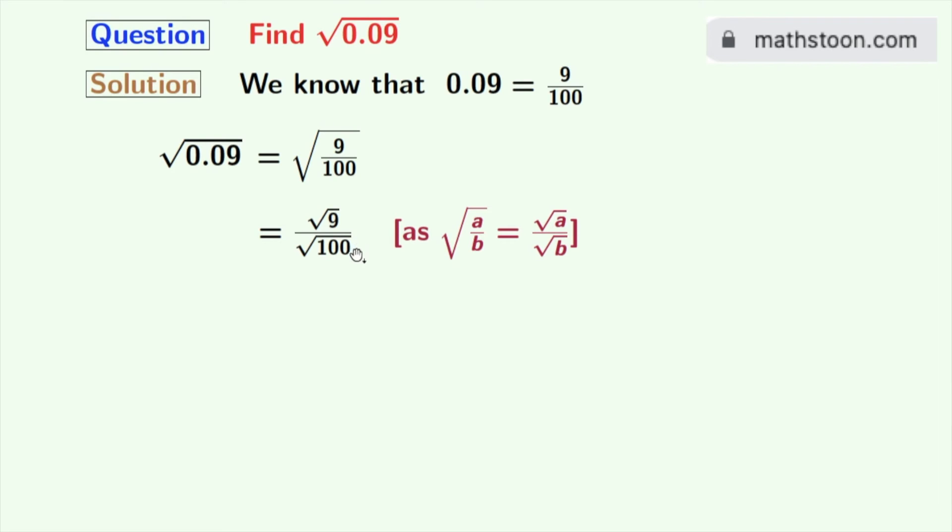So from this we get 3 by 10. Rewriting this fraction as a decimal number, we get 0.3. So the square root of 0.09 is equal to 0.3, and this is our final answer.